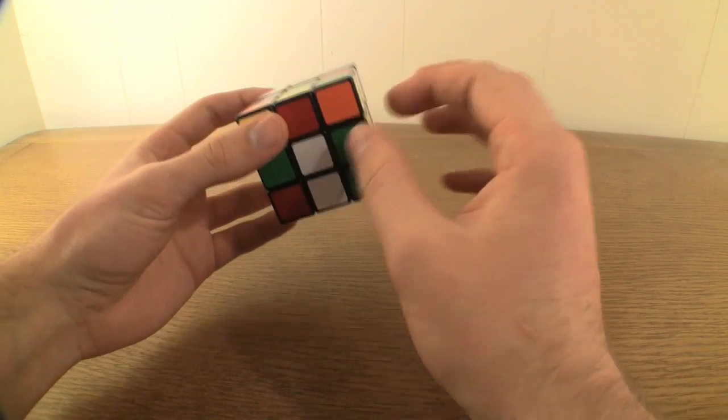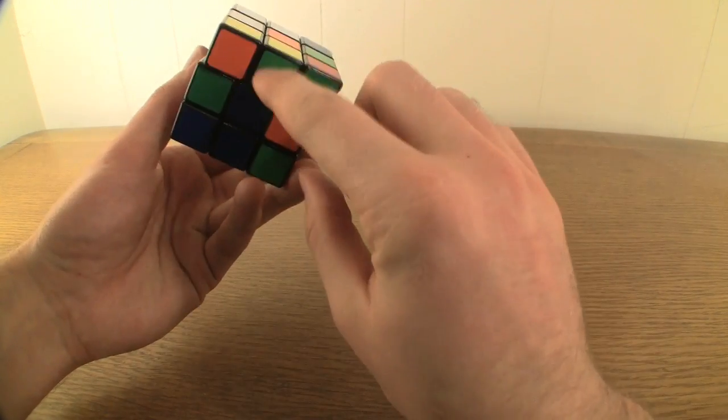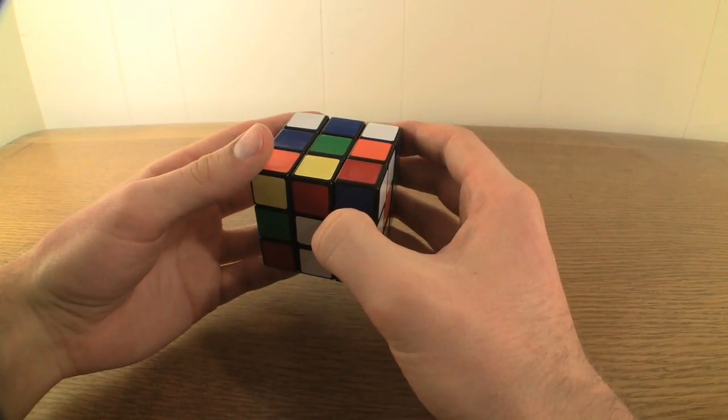twist the cube so that the edge piece you located is part of the down face. If the edge piece you located is already part of the down face, you can skip that last step.